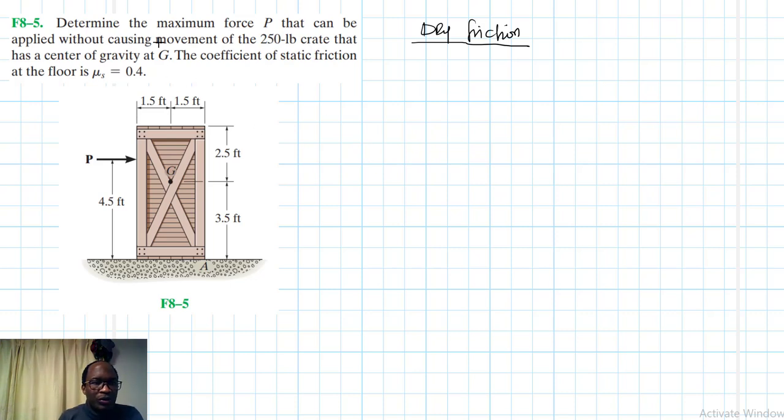The problems that we are going to be looking at in this particular chapter, we are going to encounter three types. The first one is where we experience no impending motion. In this particular case, we expect the number of unknowns to be less than or equal to the number of equations of equilibrium.